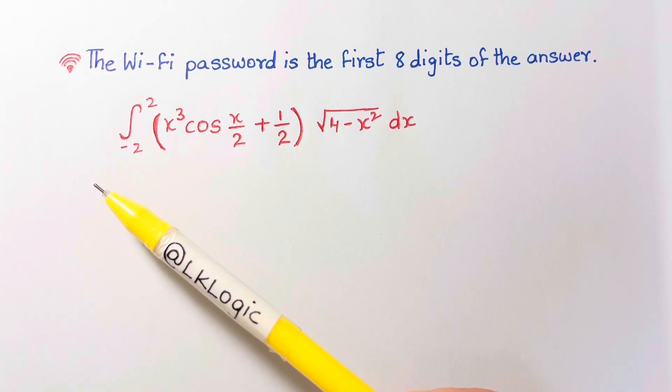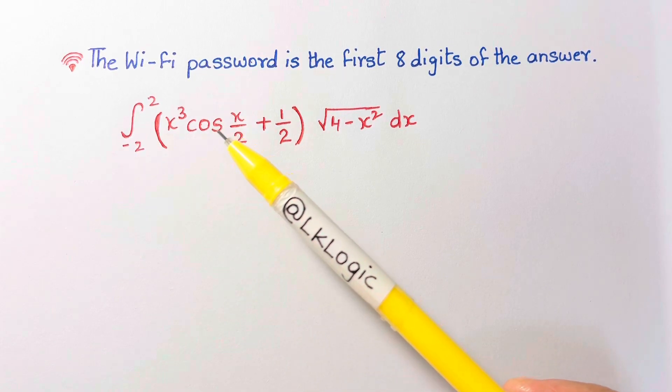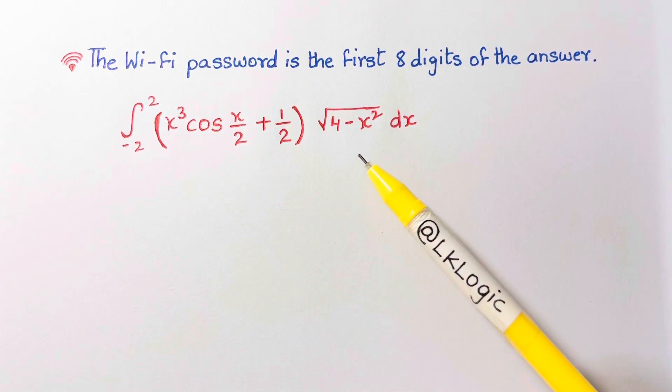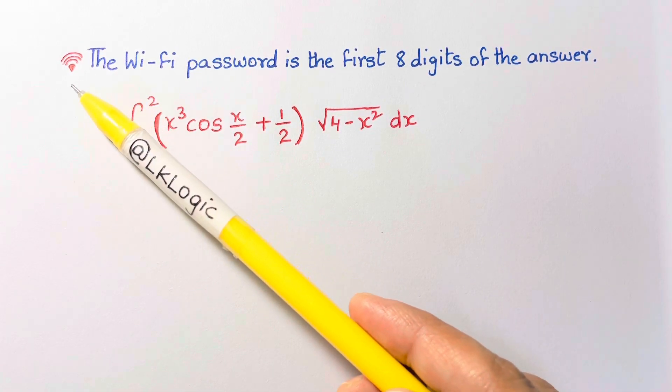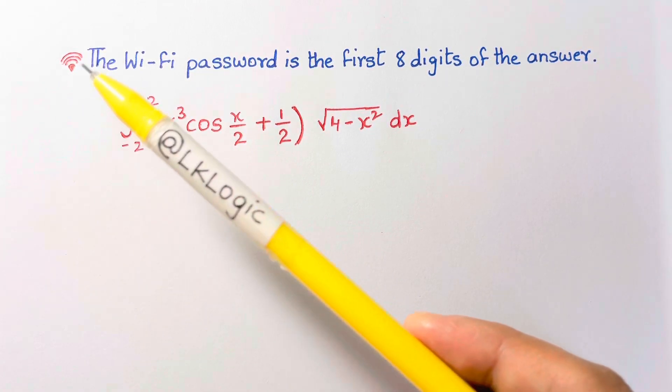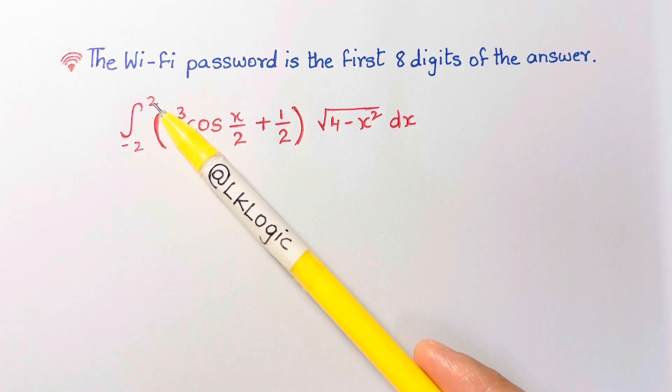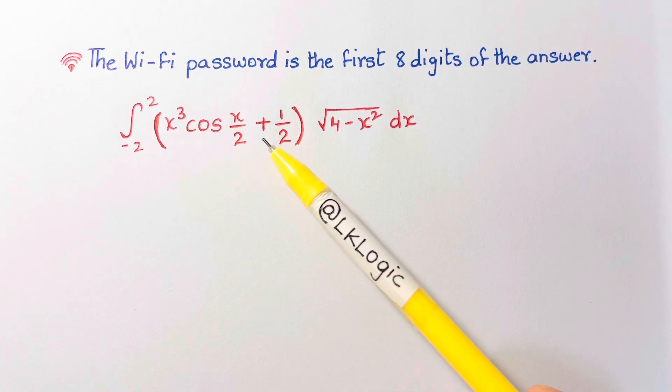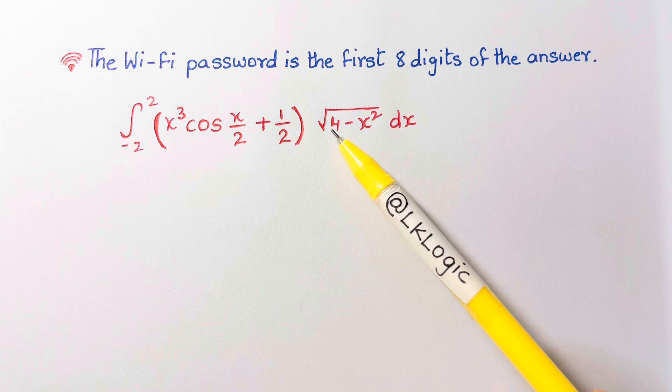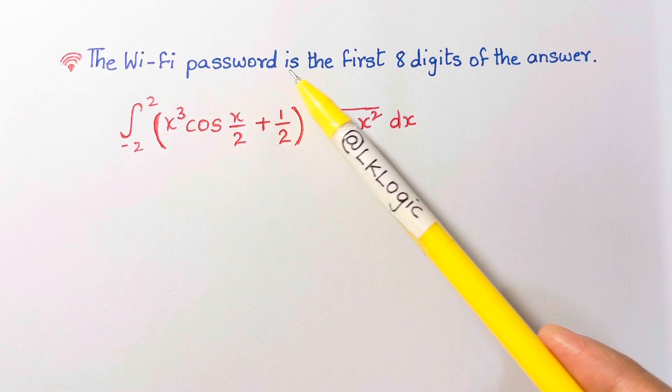Hi guys, welcome back with another interesting problem. Students in China at the Nanjing University of Aeronautics and Astronautics had to solve a math problem to connect to the internet at one of the dining halls. Here's the problem that went viral: it's the integral from -2 to 2 of the following quantity: x³ cos(x/2) + 1/2 times √(4 - x²).